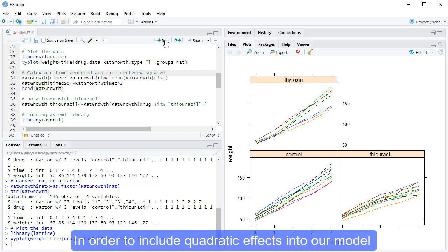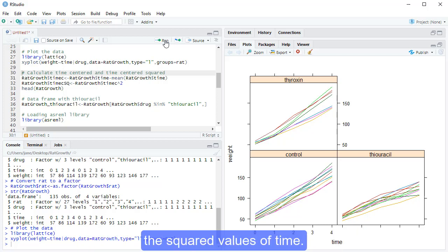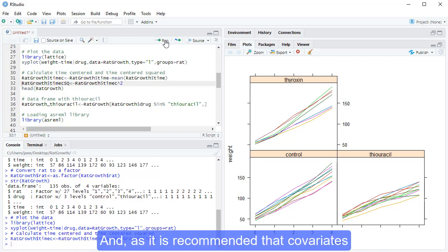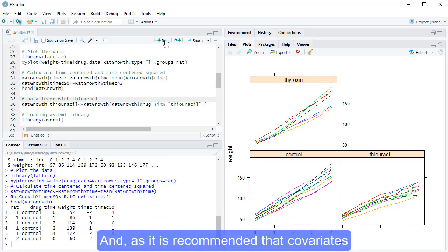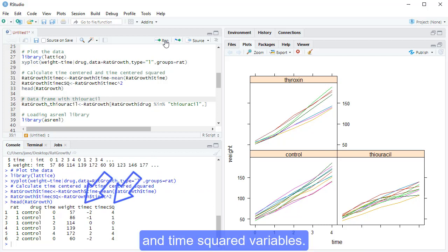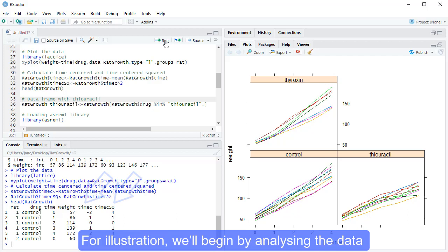In order to include quadratic effects into our model, we must first create a variable containing the squared values of time, and, as it is recommended that covariates be mean-centred, we'll calculate centred time and time-squared variables.